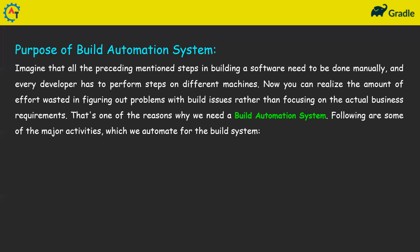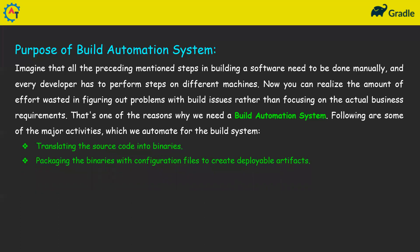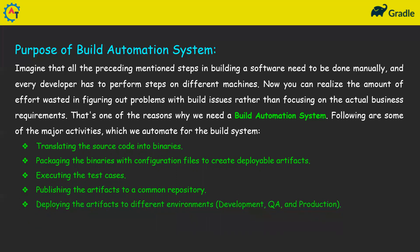To avoid those problems, we use a build automation system. The major activities it automates include: translating source code into binaries, packaging the binaries with configuration files to create deployable artifacts, executing test cases, publishing artifacts to a common repository, deploying artifacts to different environments such as development, QA, staging, or production, performing incremental builds, and generating status reports that summarize the current state of the build.